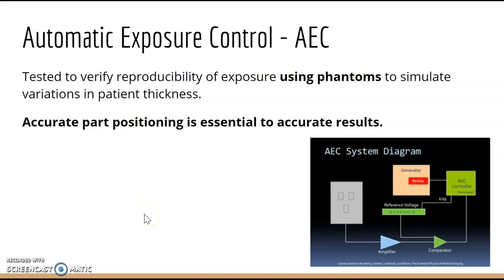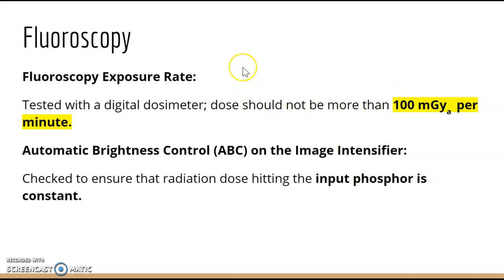Automatic Exposure Control — AEC — uses photo timing cells, and accurate part positioning over the photo cell is essential. For fluoroscopy, the exposure rate is tested with a digital dosimeter and the dose should not exceed 100 milligray per minute.